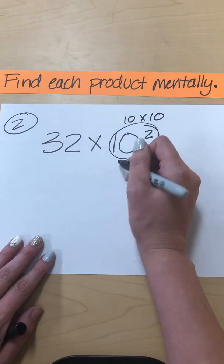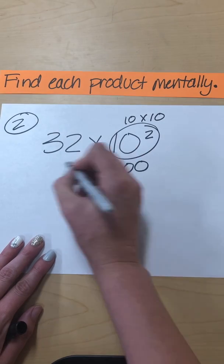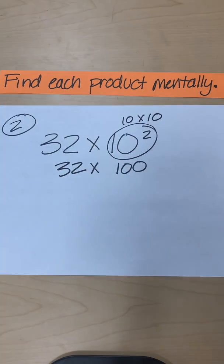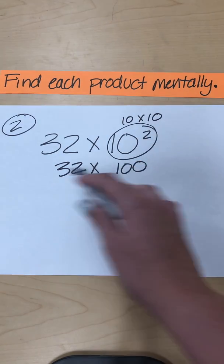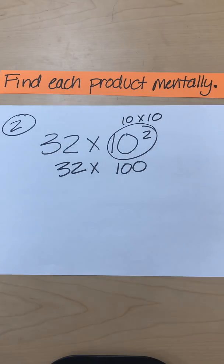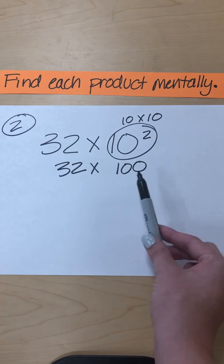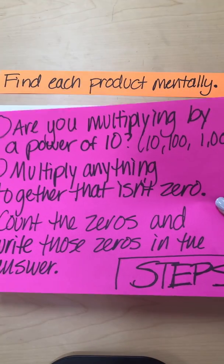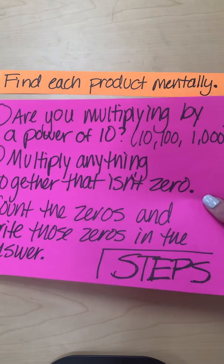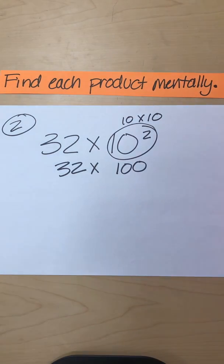If you ever see an exponent, solve that exponent, evaluate it, and then put it in so we can now work with it. So now we know how to do 32 times 100, but when we saw it like this, maybe it was a little more confusing. So are we multiplying by a power of 10 or something that 10, 100, or 1,000 goes into? Definitely. So we can use the pattern.